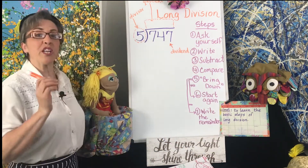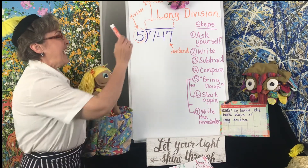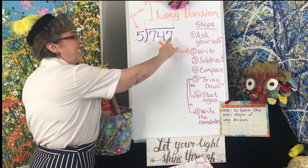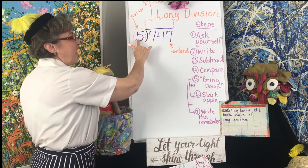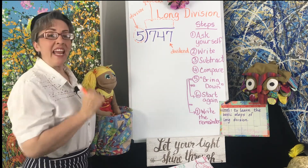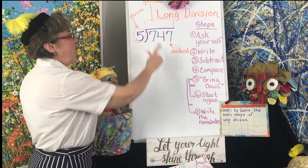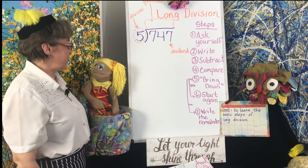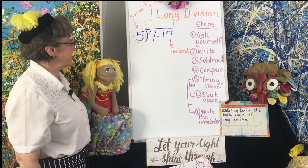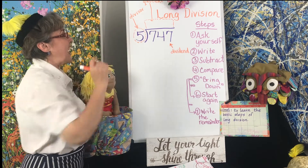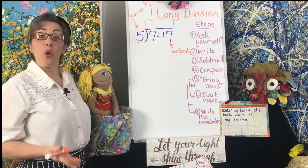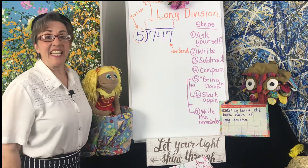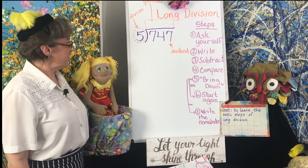First we're going to look at a few words in long division. This number here — 747 divided by 5. The numbers that are in this division sign: this number is called the dividend. The number that you're going to be dividing is the dividend. This number that's going to be doing the dividing is called the divisor. And the number we get at the end is going to be called the quotient.